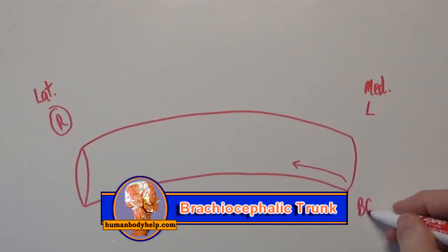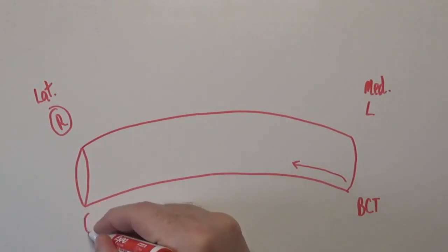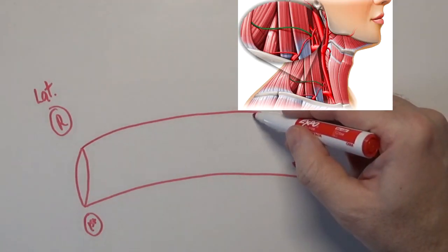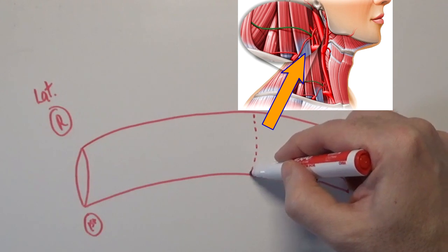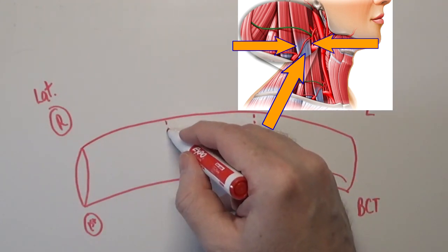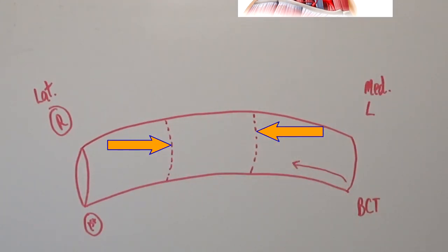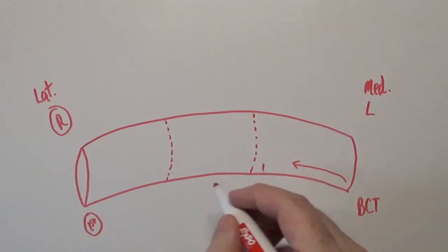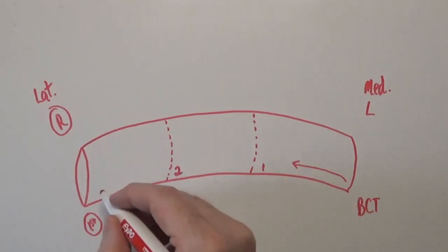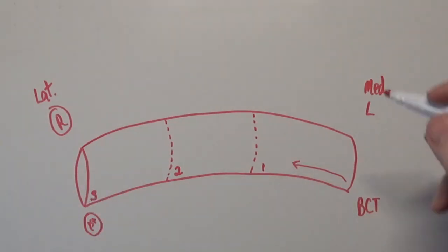I'll write BCT over here to remind us where this branch is from. Over here I'll draw the first rib. The first rib is a landmark to determine where the name of the vessel changes from subclavian to axillary. Now the anterior scalene muscle passes over the middle of the subclavian artery. Its medial and lateral borders, represented by the dotted lines, are used as landmarks to divide the artery into three parts. I'll label those parts one, two, and three.